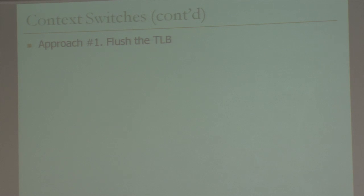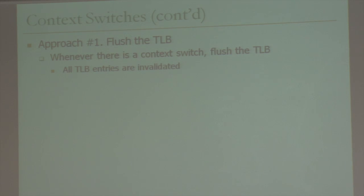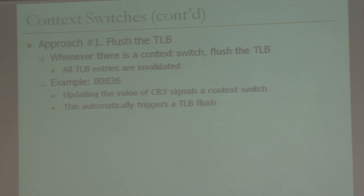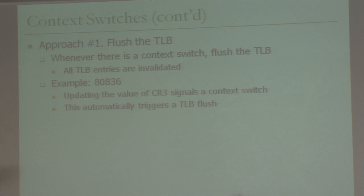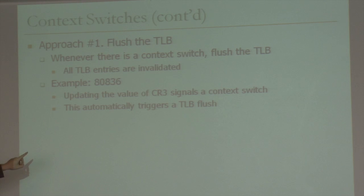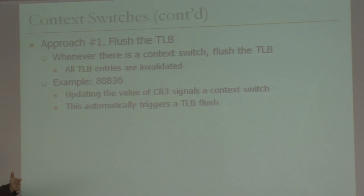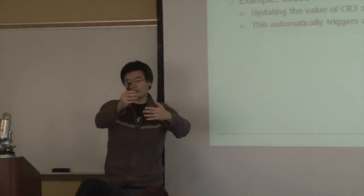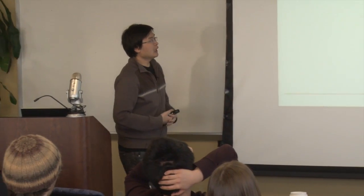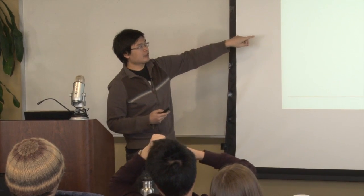One way to solve this is to flush the TLB. Whenever there's a context switch, you invalidate all the entries in your TLB. This is done in older processors — for example, the Intel 80836 from the 80s — where updating the value of CR3, which signals a context switch, automatically triggers a TLB flush. As you recall, CR3 is the base address used to look up the page directory, the earliest level of indirection when translating a virtual address to a physical address.